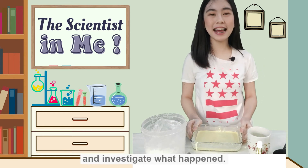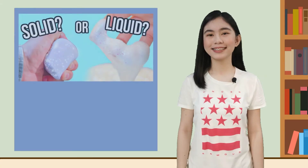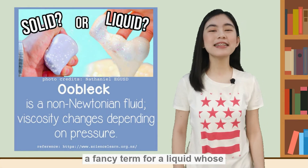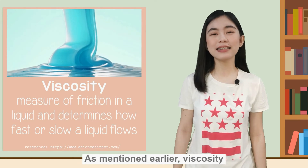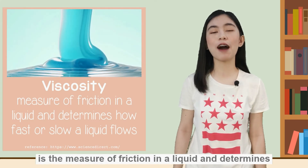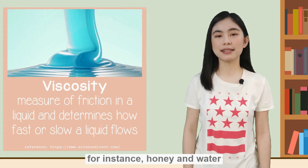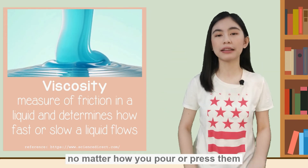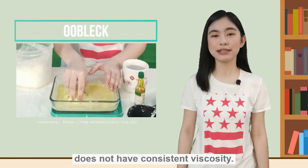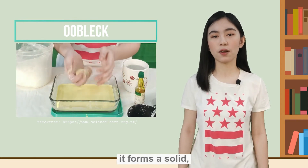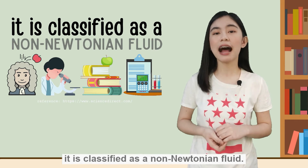Let us now dig deeper and investigate what happened. Ooblick is a non-Newtonian fluid — a fancy term for a liquid whose viscosity changes depending on pressure. Viscosity is the measure of friction in a liquid and determines how fast or slow a liquid flows. Most liquids have consistent viscosity; for instance, honey and water will always flow the same no matter how you pour or press them at a constant temperature. Ooblick, on the other hand, does not have consistent viscosity. If you apply pressure to it, it forms a solid. Loosen the pressure and it melts back into a liquid. Because the viscosity changes, it is classified as a non-Newtonian fluid.